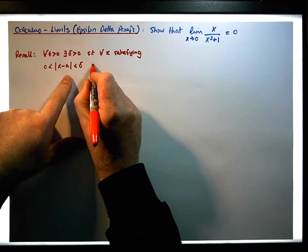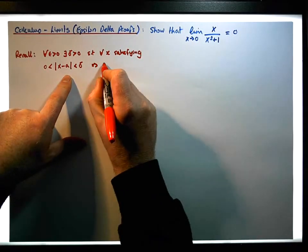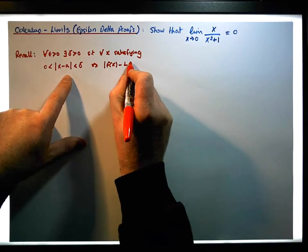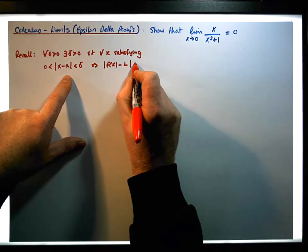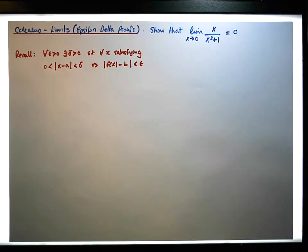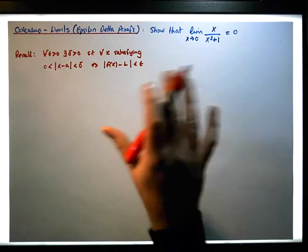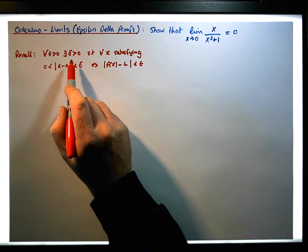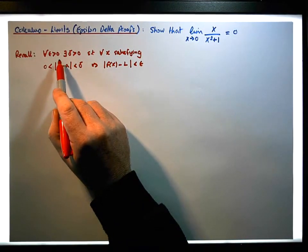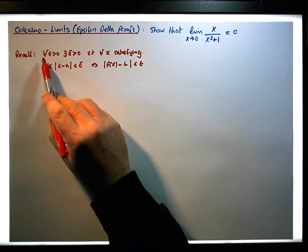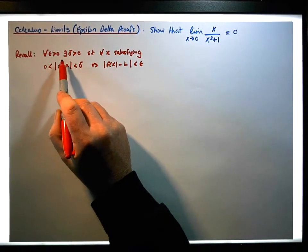This implies that the absolute value of f(x) minus L is less than epsilon. So the goal is to find an appropriate delta such that for every epsilon greater than 0, the implication holds.